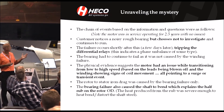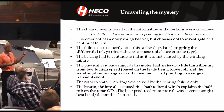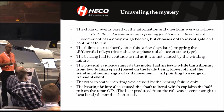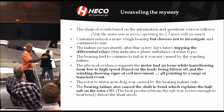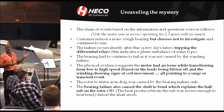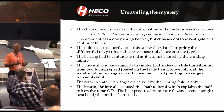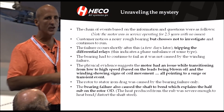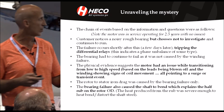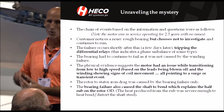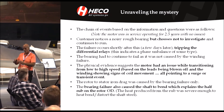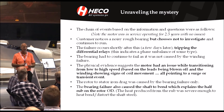Unraveling the mystery — the chain of events and information questions we asked: the motor was running good for about two and a half years. Customer noticed a rough, noisy bearing but chose not to investigate. The failure occurred shortly after, tripping differential relays, which indicates some kind of phase imbalance. Physical evidence suggests the motor had an issue while transitioning from low to high speed, based on the leads, configuration, and damage in the winding. The rotor-stator drag was caused by the bearing failure only. The bearing failure also caused the shaft to bend — that's why the rotor was only dragging on one side. Picture the rotor has a bow in it; it's only going to hit the high side as it goes around in only one area.